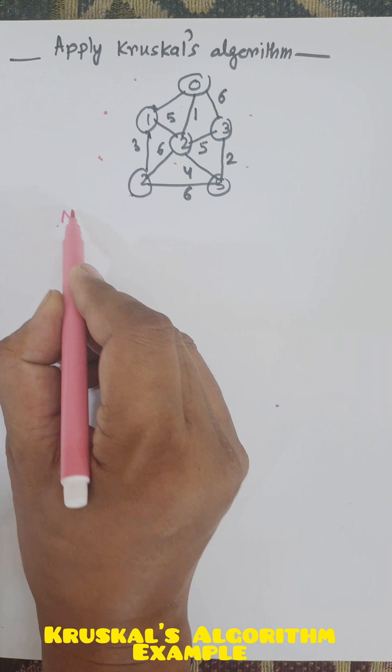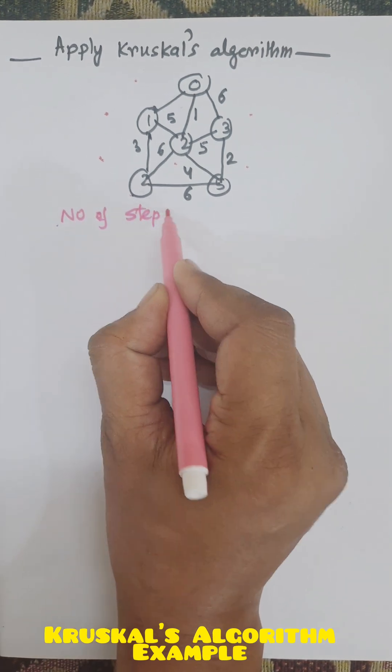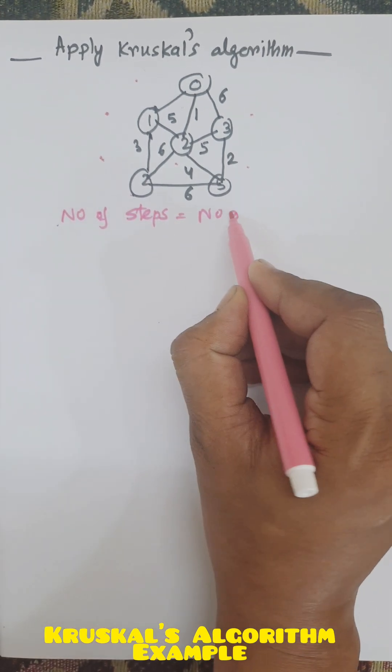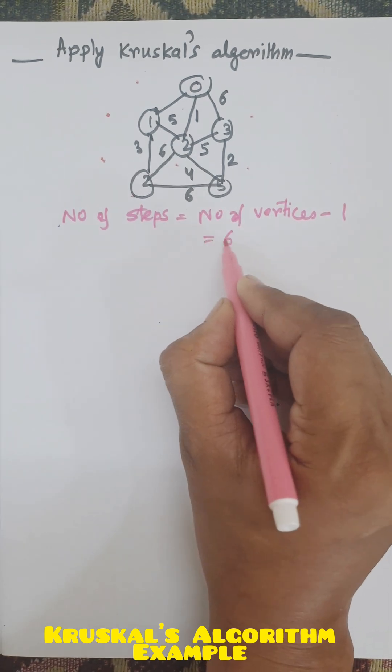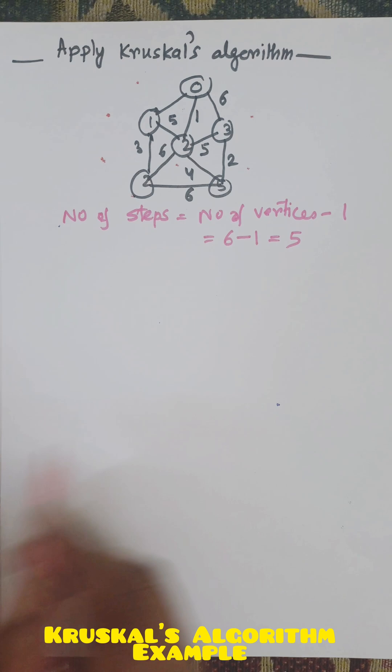First of all, we need to find the number of steps. Number of steps equals number of vertices minus 1. Number of vertices is 6 minus 1, that equals 5. So number of steps will be 5.